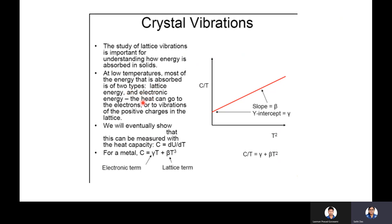The heat can go to the electrons as electronic energy, or the heat can go to the vibration of the positive charges in the lattice. This can be measured from the heat capacity, expressed as C = dU/dT. For a metal, C consists of two terms: one is the electronic term and another is the lattice term. So C = γT + βT³, or it can be written as C/T = γ + βT².